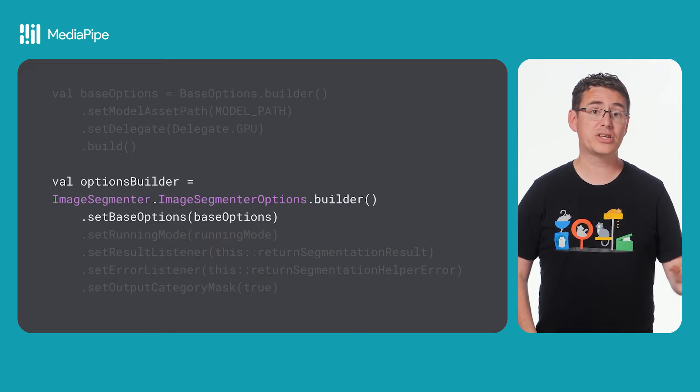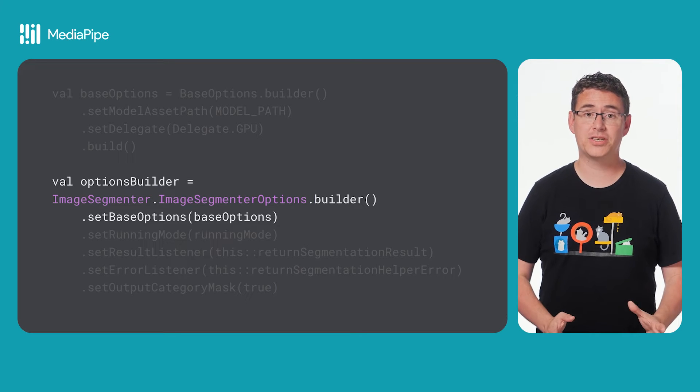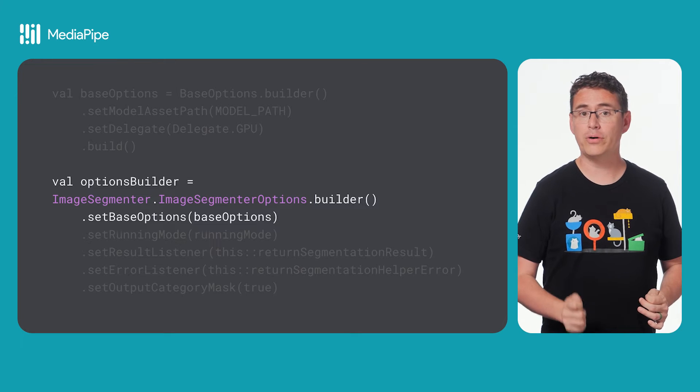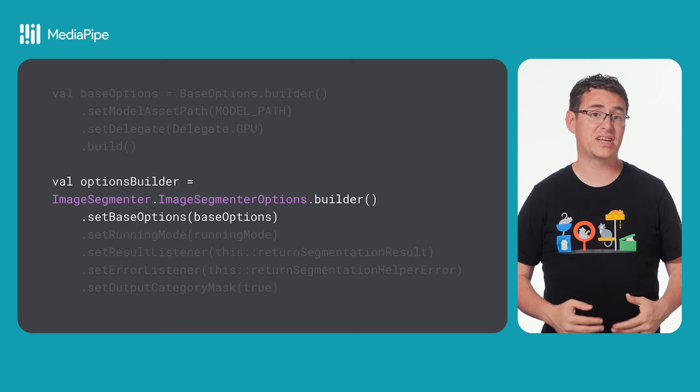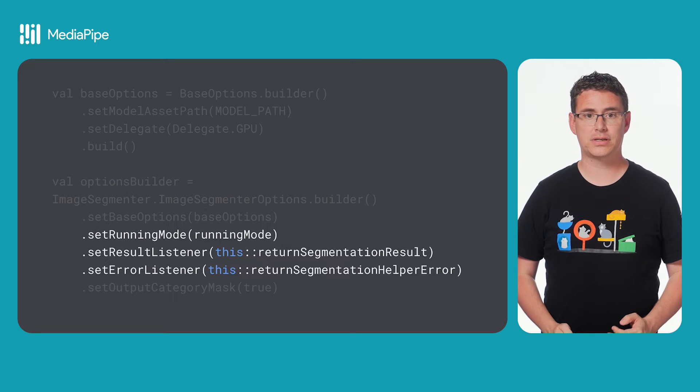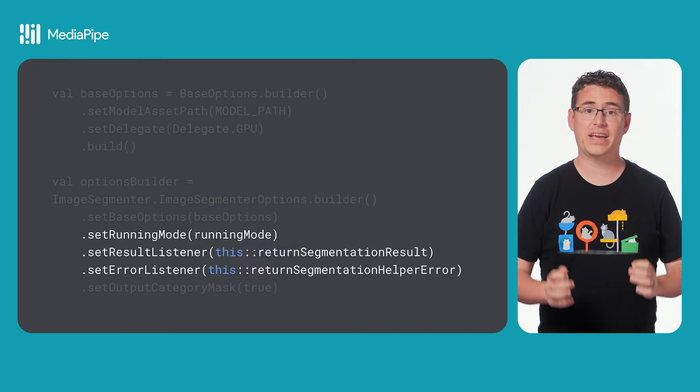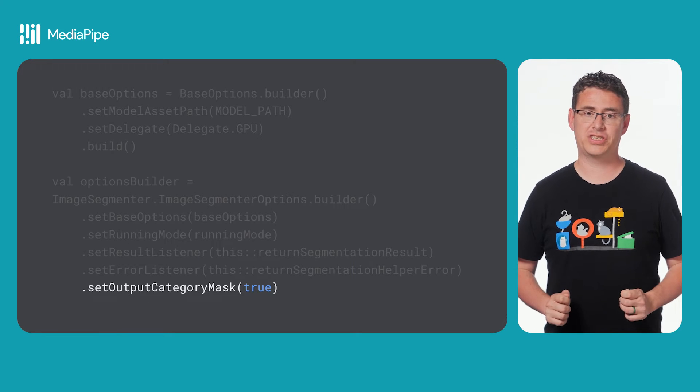Remember that MediaPipe task is for on-device machine learning, meaning this model will need to be available on the user's device before it can be used. You will then associate that base options object with the image segmenter specific options object. In this example, you'll also use a live camera stream, meaning you will need to attach a set of result and error listeners. After that, you will tell the image segmenter that you want to use a category mask for your segmentation type.